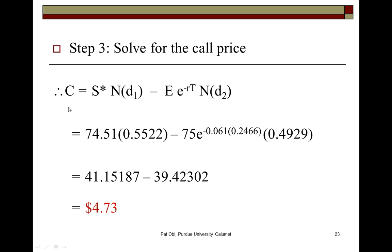With that, you recalculate the call price, and as you can see here, it comes out to be about $4.73. If you recall, without dividends we calculated this to be $5.00. So the call price is less, as you can see, when the option is written on a dividend-paying stock.